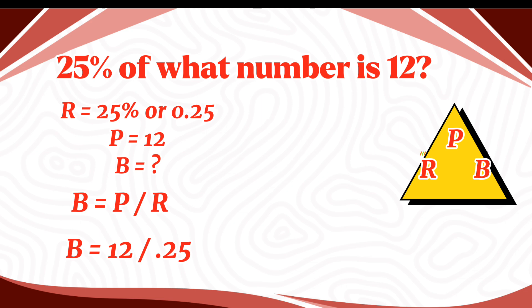Why 0.25? Because we convert 25% into decimals. In converting, we just have to move two decimal places to the left. So let's compute. The value of our B here now is 48. Meaning, whatever method you chose, as long as you're in the right track, you'll still have the same answer.